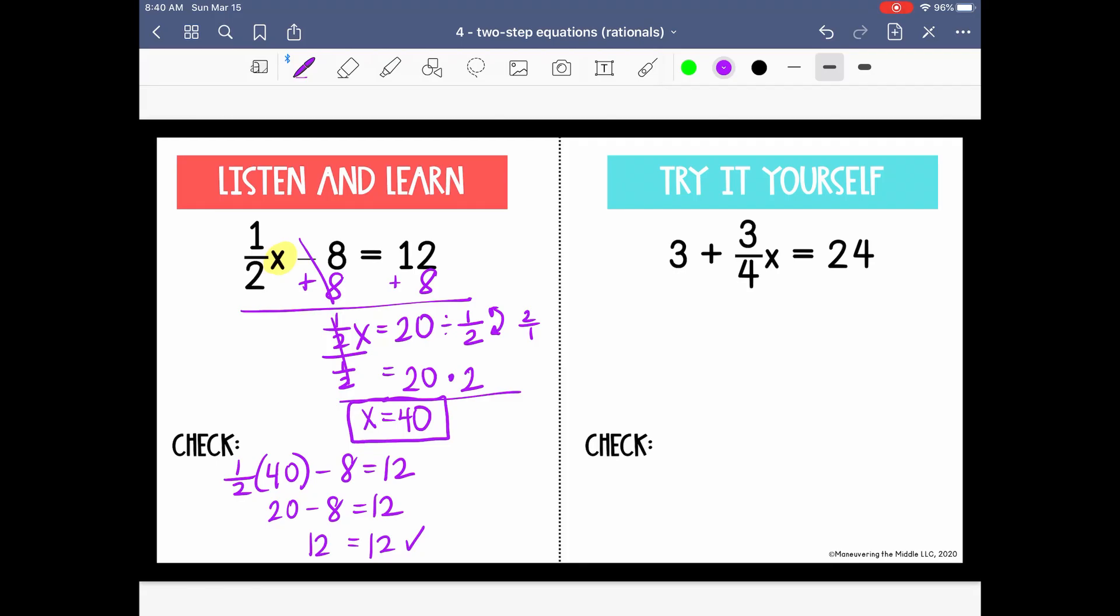Pause the video and try the example on the right. 3 plus 3 fourths x equals 24. So start by removing the constant term by subtracting 3 from both sides. It cancels on the left. And we have 3 fourths x equals 21.